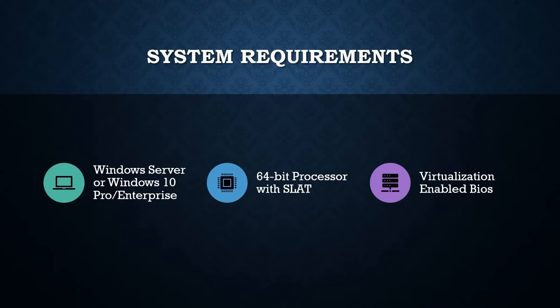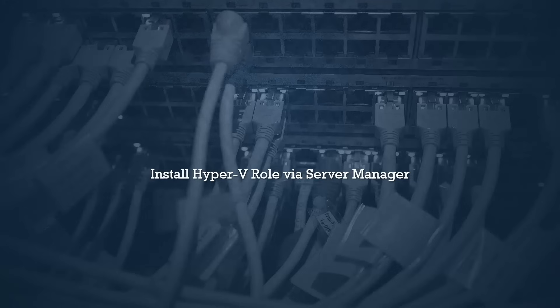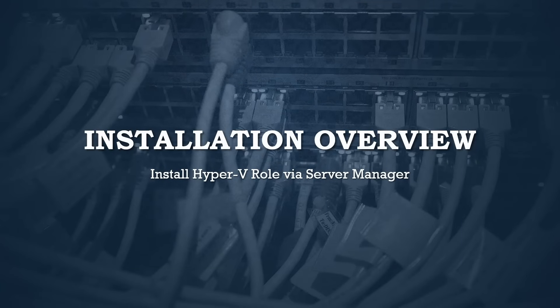Before you get started with Hyper-V, it's important to ensure your system meets the necessary requirements. Hyper-V is available on Windows 10 Pro or Enterprise editions, but you'll need a 64-bit processor that supports Second Level Address Translation, or SLAT. Additionally, hardware-assisted virtualization must be enabled in your BIOS or UEFI settings. Installing Hyper-V is straightforward. On Windows 10, you can enable Hyper-V through Windows Features. For Windows Server, you can install the Hyper-V role using Server Manager. Both methods are simple and typically involve just a few clicks to get Hyper-V up and running on your system.